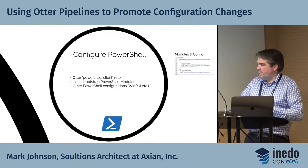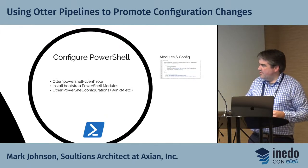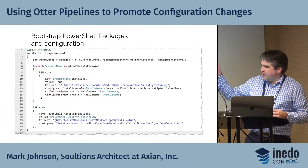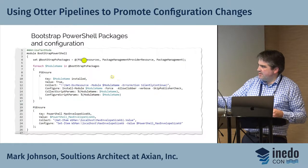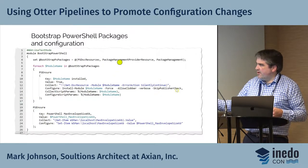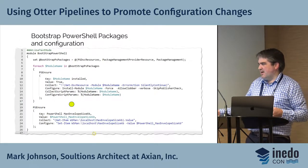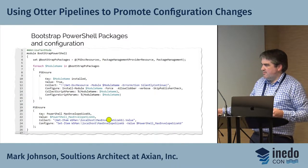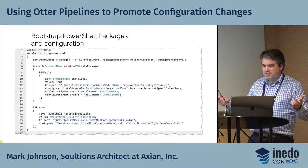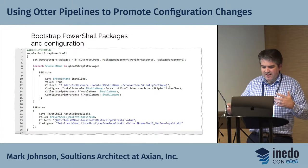Getting it working on dev servers first is the goal. We want to configure PowerShell — making sure WinRM is set up, bootstrapping PowerShell modules, some DSC modules for additional configuration. Here's a sample Otter script showing how to install some of these PowerShell packages: DSC resources, Package Management provider, and using raw PowerShell to install those modules from the PS Gallery. It also sets up the WinRM max envelope size so you don't hit 'envelope size exceeded' errors.